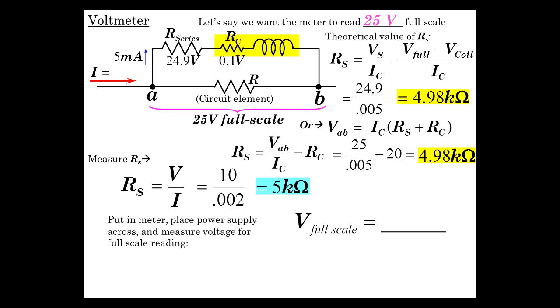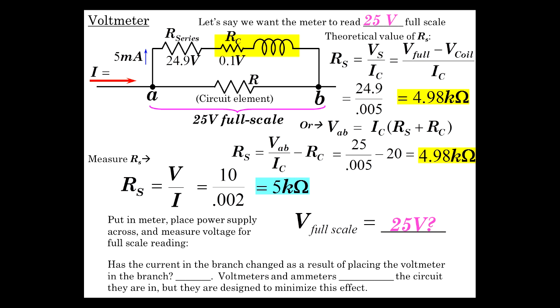So you use that, you stick the 5k ohm resistor in there, you put it in the meter, you put the power supply across the circuit, you measure the voltage with an external voltmeter. You measure the voltage across here, then when this is full scale, when the meter reads full scale, and hopefully that voltage will be about 25 volts. There'll be some variance with that because the series resistors aren't going to be perfect.